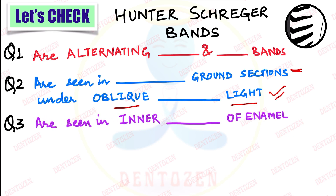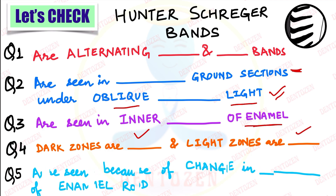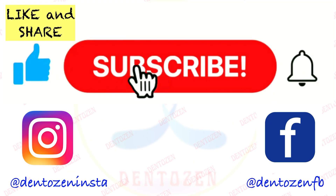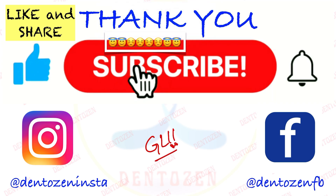Hunter-Schreger bands are seen under oblique — what kind of — light. Hunter-Schreger bands are seen in the inner — which part — of the enamel. Dark zones are called — what — and light zones are called — what. Hunter-Schreger bands are seen because of change in — what — of enamel rods. That's all for this video. If you enjoyed it, tap the like button, share with your friends, keep watching, keep learning, and most importantly keep smiling. Good luck for your exams — see you in the next video, take care, bye!